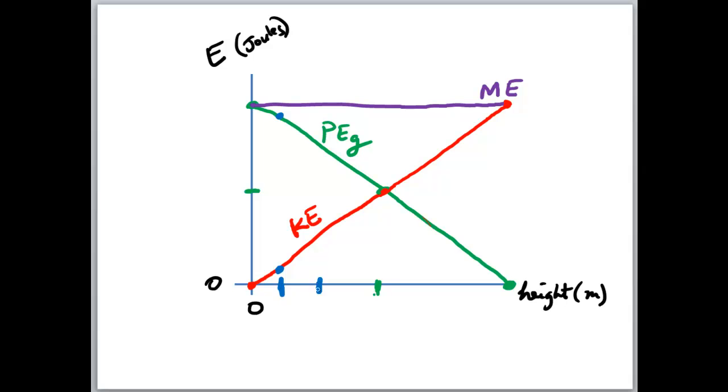Looking further, if we go one-fourth of the drop, the potential energy is about 75% of its original value. The 25% that the potential energy has decreased is exactly how much the kinetic energy has increased. If we look at the midpoint, potential energy has lost exactly half of its value, and that's exactly how much kinetic energy has gained.